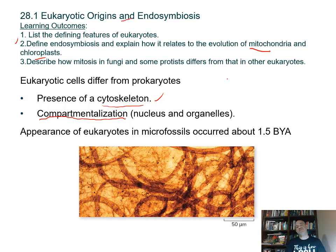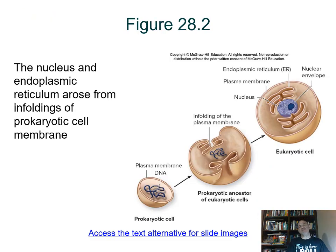The first definite eukaryote fossils appeared in rocks about 1.5 billion years ago, setting a roundabout time we know eukaryotes appeared in the history of life. This diagram shows parts of the process that may have occurred. Some supporting evidence comes from prokaryotic cells — bacteria — that do have extensive infolding of their plasma membrane.